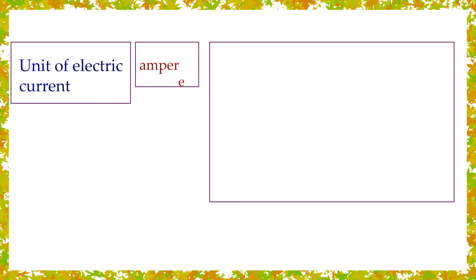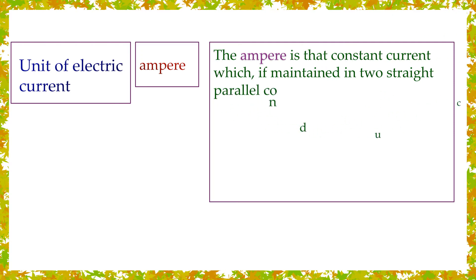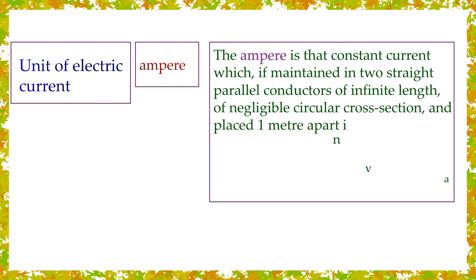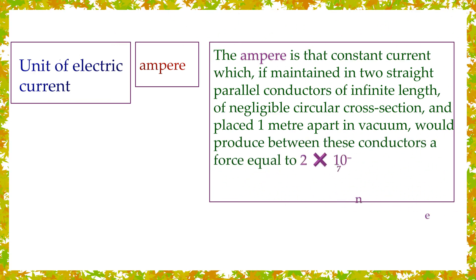Unit of electric current: ampere. The ampere is that constant current which, if maintained in two straight parallel conductors of infinite length of negligible circular cross-section and placed 1 meter apart in vacuum, would produce between these conductors a force equal to 2×10^-7 newton per meter of length.